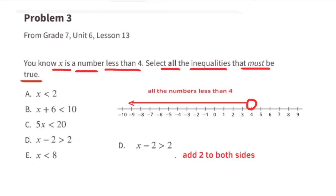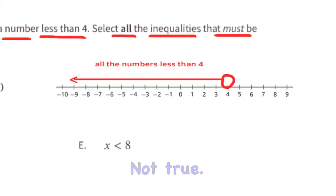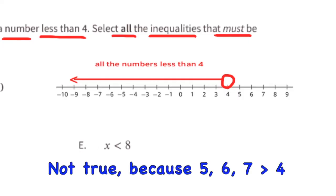Option d: x minus 2 is greater than 2. Add 2 to both sides and you have x is greater than four. This is not true because the original inequality was x is less than four. Option e: x is less than 8. This is not true because 5, 6, and 7 are all less than 8 but greater than four, so all values less than eight are not necessarily less than four.